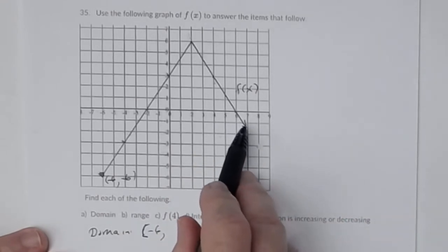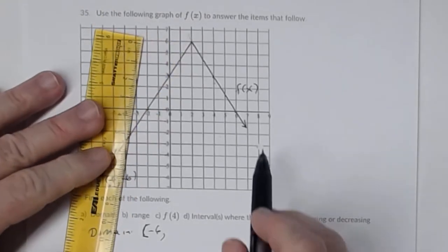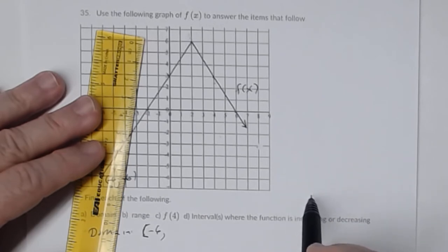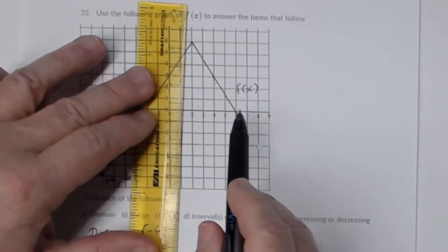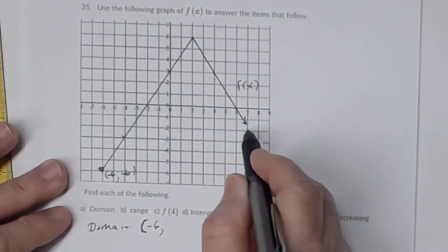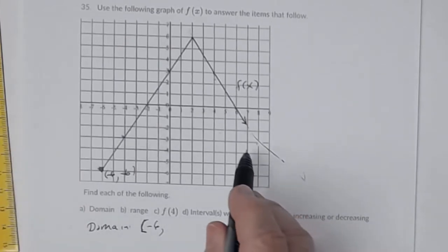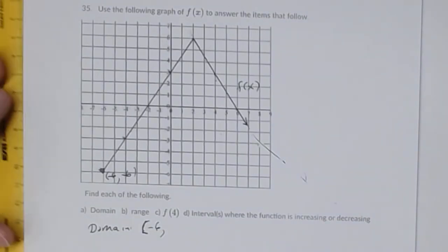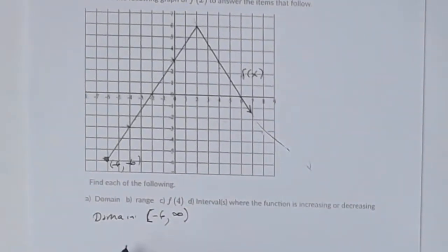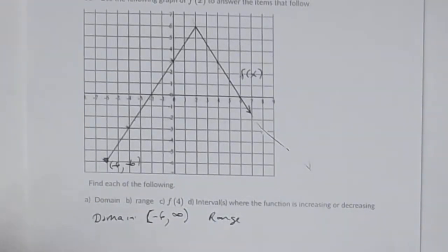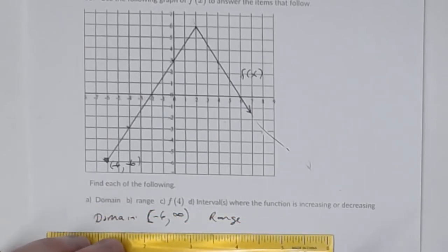Some students get confused seeing this arrow pointing down toward negative y values and want to say negative infinity for the domain endpoint. Be careful — you're looking at x values. If you're at this point here, that x value is positive. As you extend the graph, all those x values are positive and getting larger; the y values are negative, but the x values are positive going to positive infinity.